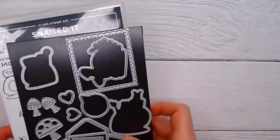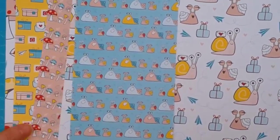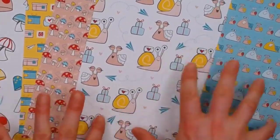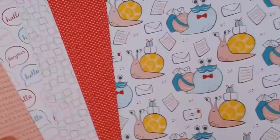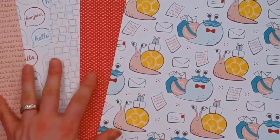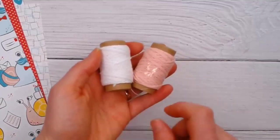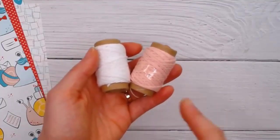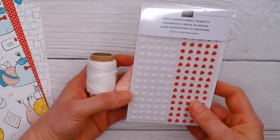In this particular suite there is a designer series paper. One side you've got the snails and some cute mushrooms and some little postal images, and then on the other side you have similar images. In this suite you've got the Blushing Bride and Whisper White Twine which I have found to be really useful for using with many of the other suites, particularly the hydrangeas.